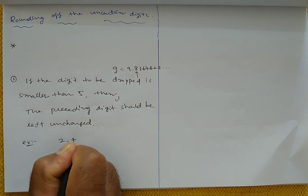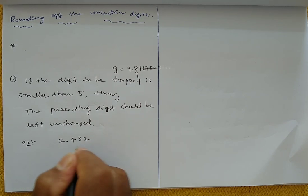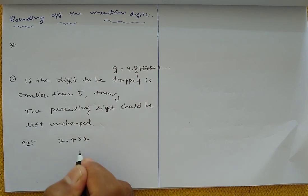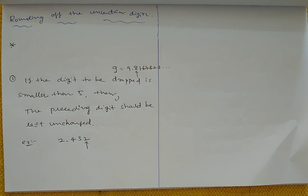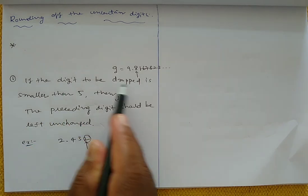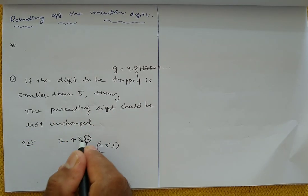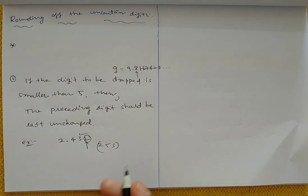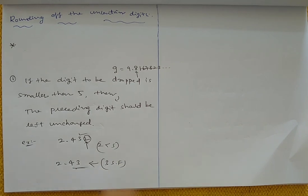For example, if a number is given as 2.432, there are 4 significant figures, but we want only 3. That means we want to eliminate the last digit, which is 2. Now observe: 2 is less than 5, so according to the rule, the preceding digit should be left unchanged. So the answer is 2.43, which has 3 significant figures.